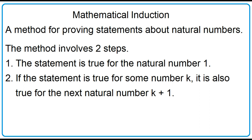The method involves two steps. One, the statement is true for the natural number one. Two, if the statement is true for some number k, it is also true for the next natural number k plus one. Then the statement is true for all natural numbers n.